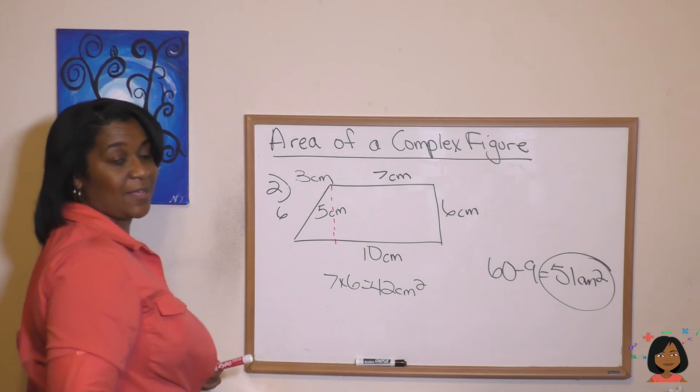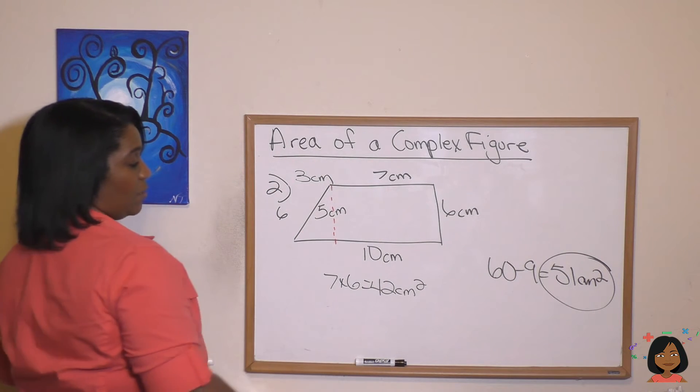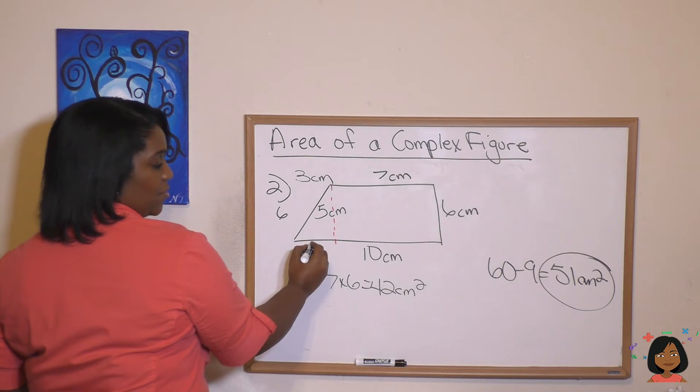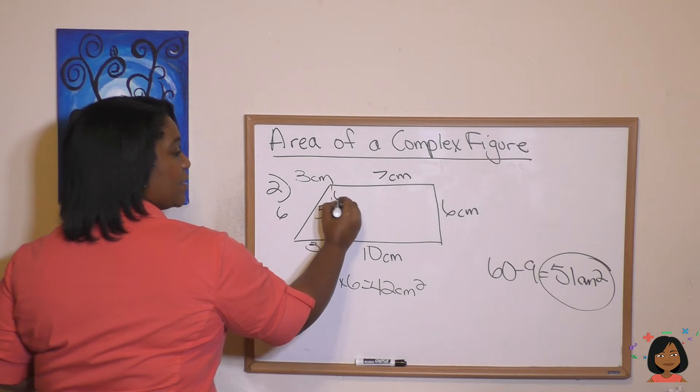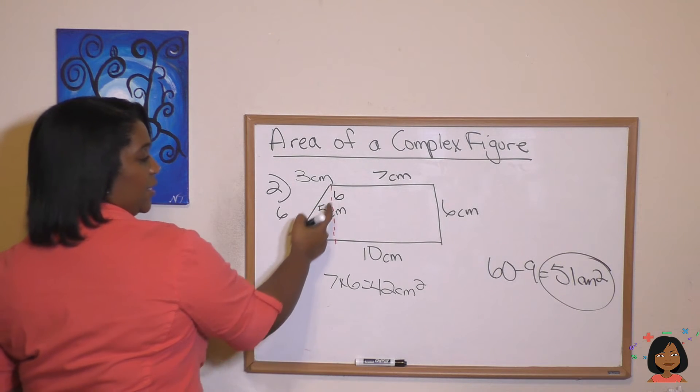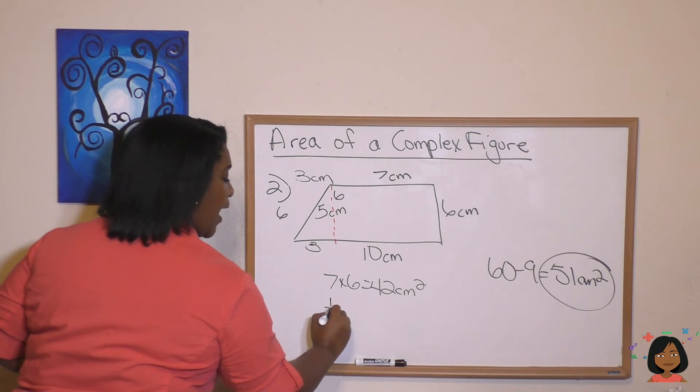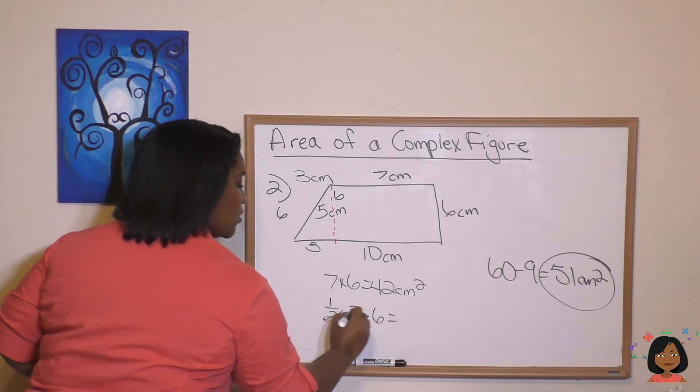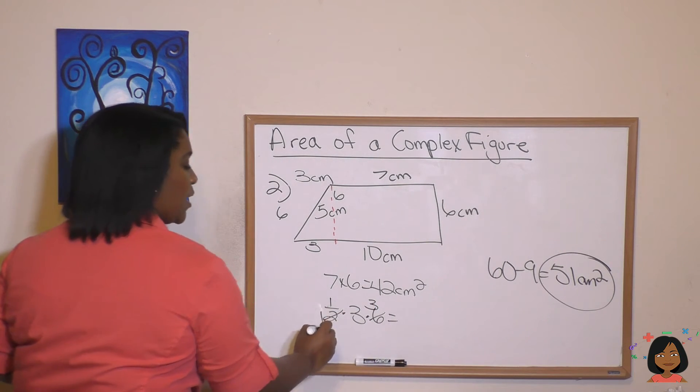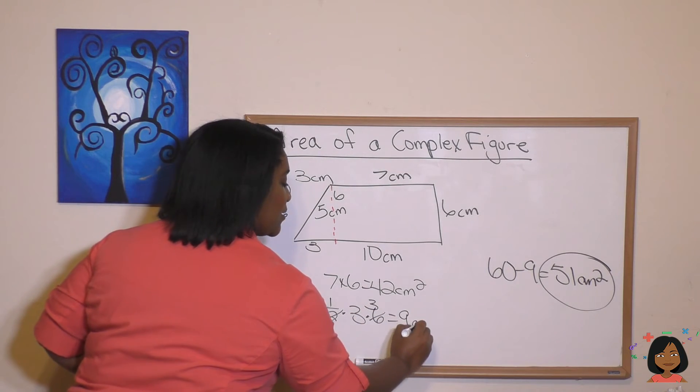That's for the rectangle. And what about the triangle? Our base we know is 3. Our height we know is 6. There it is right there. 3 times 6. So 1 half times 3 times 6. Do some canceling. And we end up with 9 centimeters.